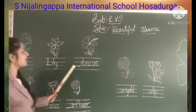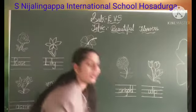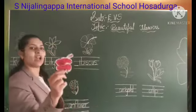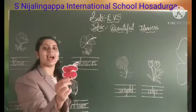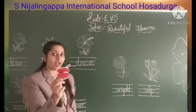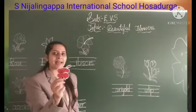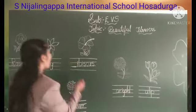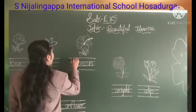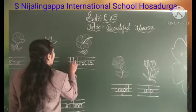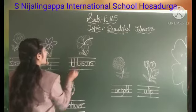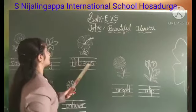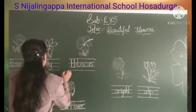Okay, next one — look at here. What is this? Which flower is this? Hibiscus. Which flower? Hibiscus. So you write H here. H-I-B-I-S-C-U-S, hibiscus.